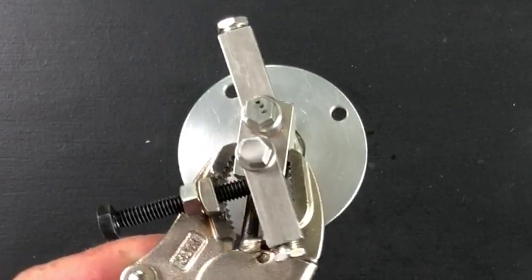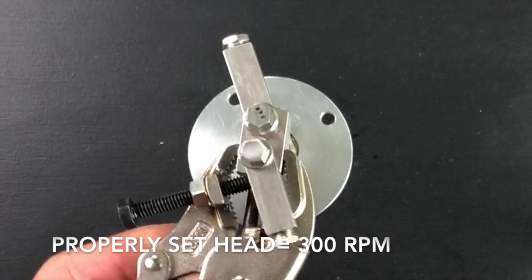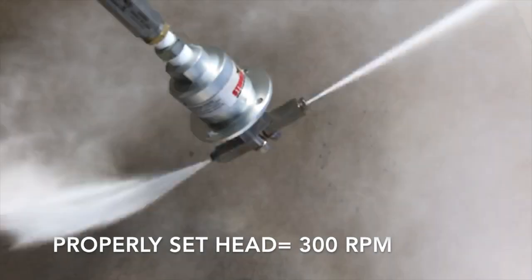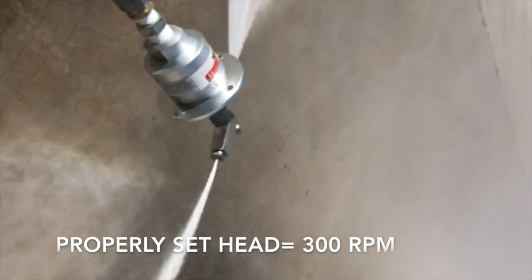A properly set head reaches a speed of around 300 RPM and has a max impact range at approximately 18 inches from the end of the spray tip.